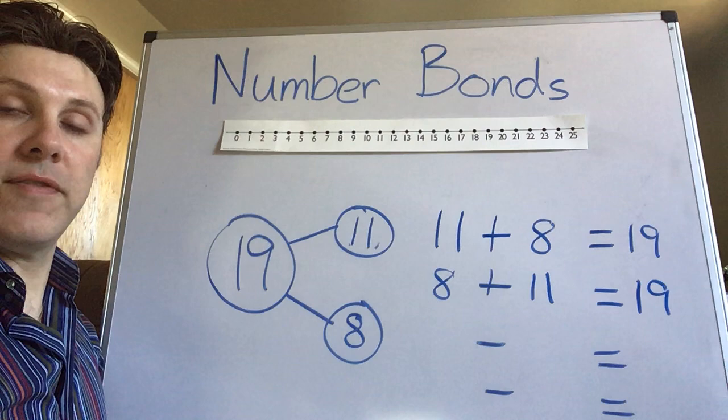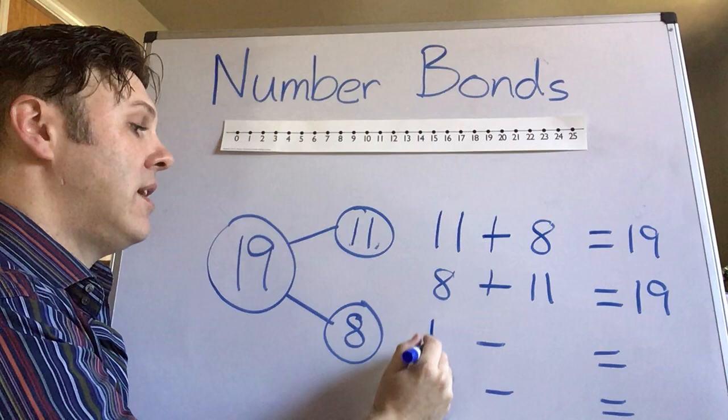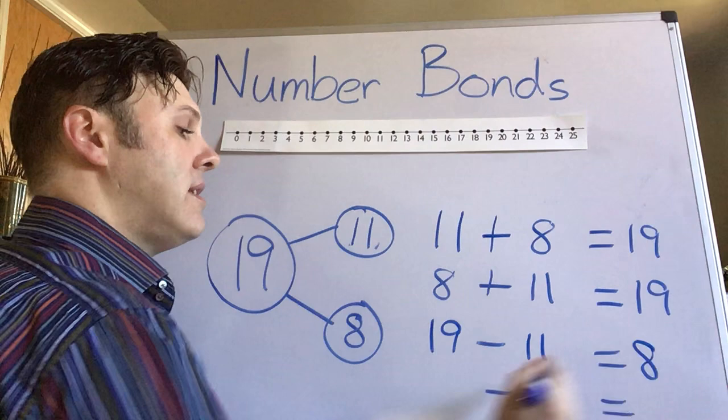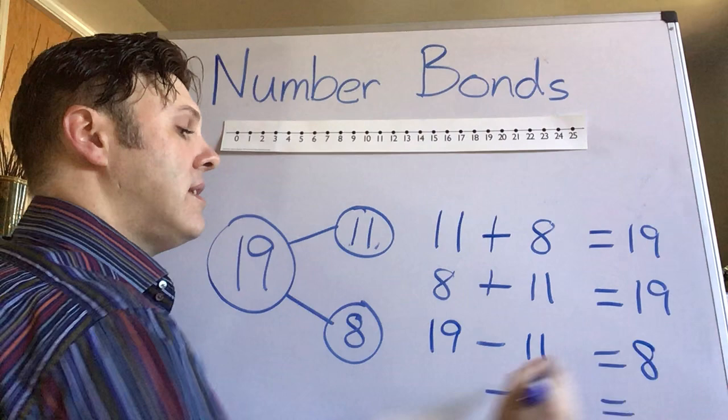Now what do we do for subtraction? That's right. We're gonna get that big number first. Nineteen minus eleven equals eight. Nineteen minus eight equals eleven.